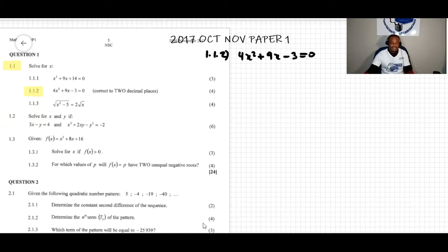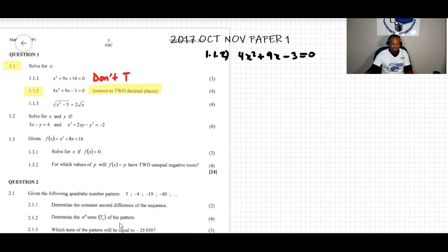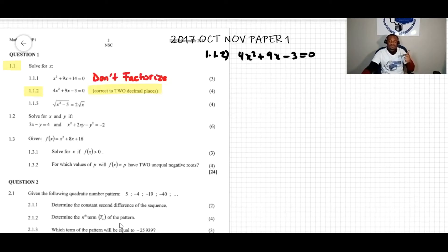As I usually say, whenever you see the statement 'correct to certain decimal places,' that is also a sign — don't factorize. We have two options to solve this quadratic equation: we can use the quadratic formula or by completing the square. Let's work it out using the quadratic formula.